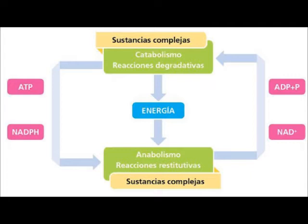Catabolism and anabolism are two parts of the same system called metabolism, which needs both parts. We will see in each metabolic route — for glucides and others — how the catabolic part produces the release of energy in the form of ATP and reduced electron carriers like NADH and FADH2, and those are then used by anabolism to carry out other types of routes. We need both to maintain equilibrium and to perform many functions. Although at first they seem to go in opposite directions, both things maintain the balance.